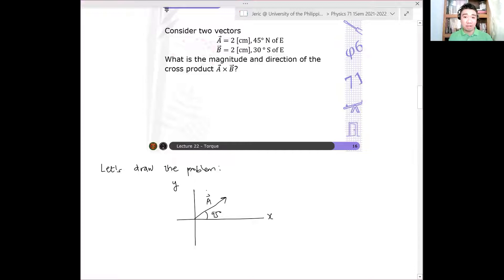And then vector B, on the other hand - you start with east, turn 30 degrees towards south. So it's here now. You have this is 30 degrees, this is vector B. This is vector B.